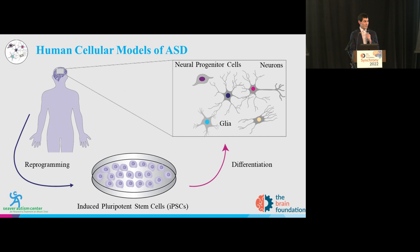And then in purple, we have another class of autism genes with putative functions in regulating gene expression. We also know a lot about the expression profile of these genes — when and where they're expressed in human neurodevelopment. The purple gene expression regulator genes are highly expressed during prenatal development, while the green genes involved in neuronal communication gradually increase over this period and then remain highly expressed.